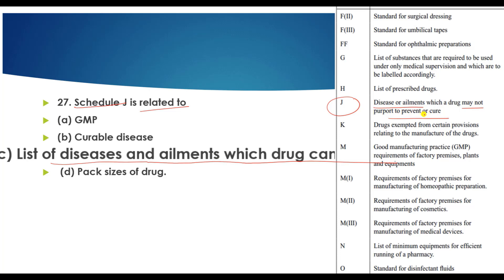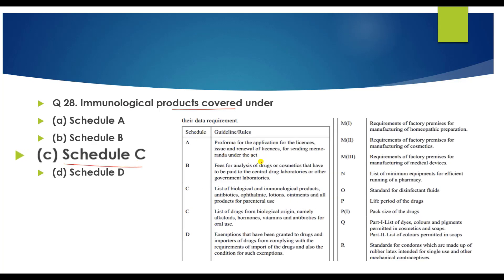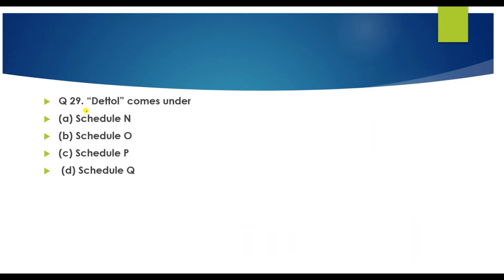Question number 28: Immunological products come under Schedule C. Schedule C covers biological and immunological products. Questions may be asked about either biological products or immunological products separately.